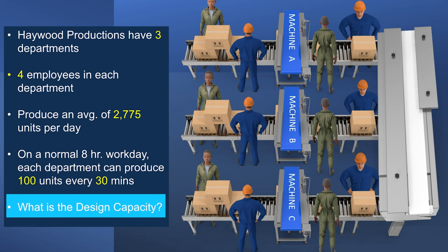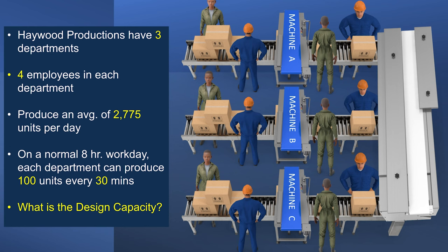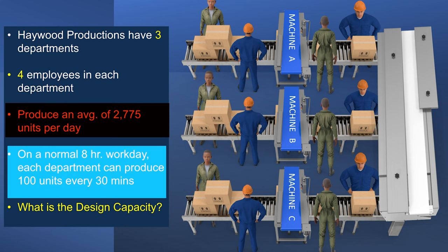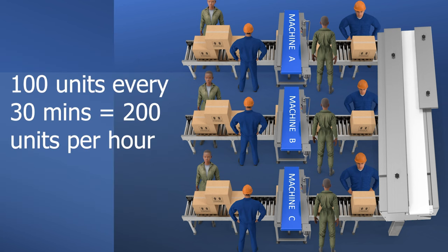What is the design capacity? The first thing to consider is what information is relevant. How much we produce on average is irrelevant to design capacity — remember, design capacity is the maximum amount achievable on a perfect day under perfect circumstances. So we're looking at the eight-hour workday producing 100 units every 30 minutes. That means we can produce 200 units per hour, which makes the math easier.